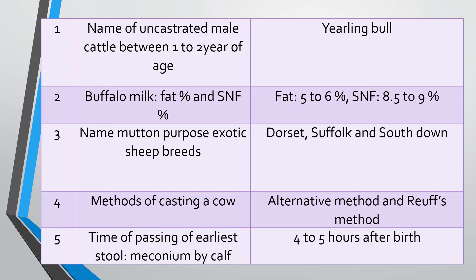Question two: Buffalo milk — average fat percent and SNF percent. Answer: The buffalo has a slightly higher fat percent, 5 to 6 percent on average; for some time it may reach up to 7 or 8 percent. SNF (solid not fat) is 8.5 to 9 percent.